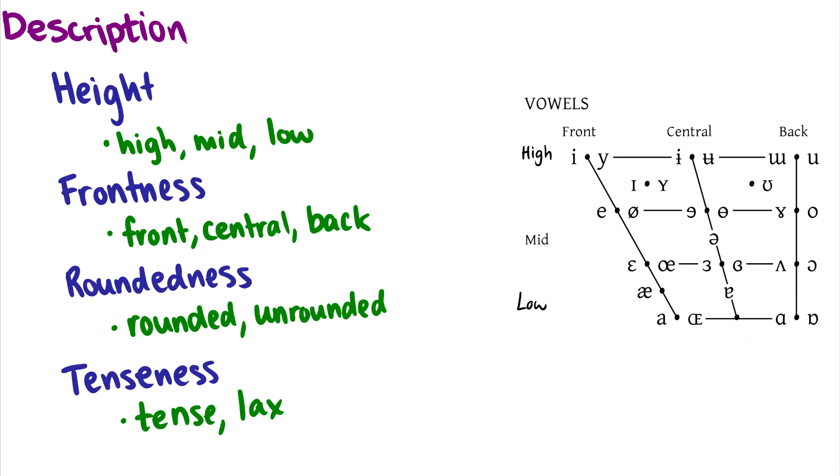So those are all the vowels. I want to introduce the symbols and the sounds before we talk about descriptions, because the descriptions can be quite intimidating. With a description of a vowel, we need four different components: height, frontness, roundedness, and tenseness. This all happens to be about your tongue, and then roundedness would be about your lips.